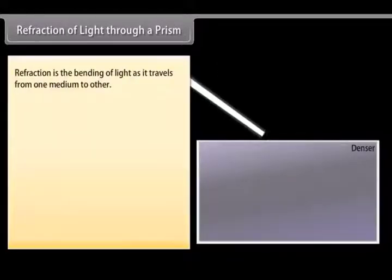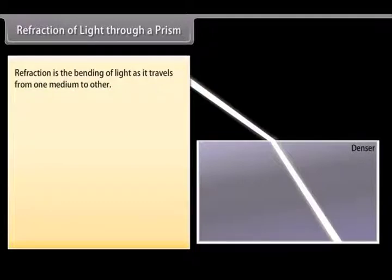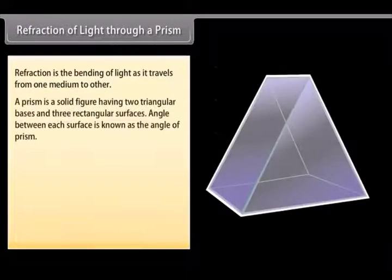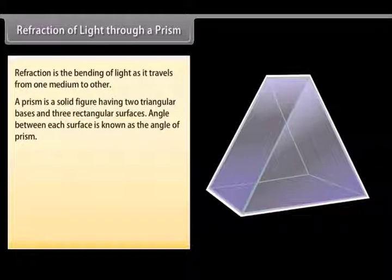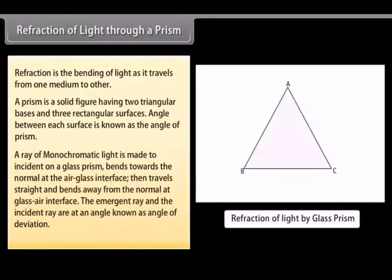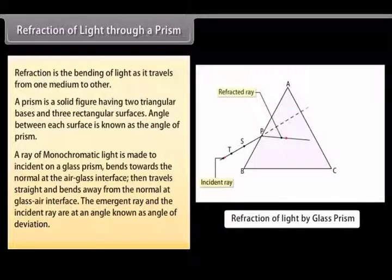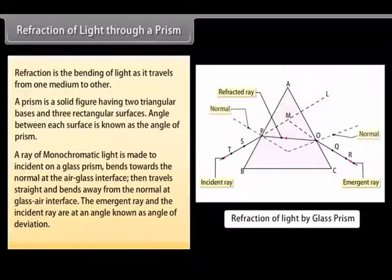Refraction of light through a prism: Refraction is the bending of light as it travels from one medium to another. A prism is a solid figure having two triangular bases and three rectangular surfaces; the angle between each surface is known as the angle of prism. A ray of monochromatic light incident on a glass prism bends towards the normal at the air-glass interface, then travels straight, and bends away from the normal at the glass-air interface. The emergent ray and the incident ray are at an angle known as the angle of deviation.